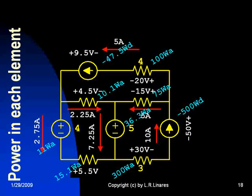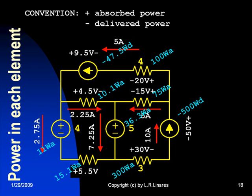So you see, there are two sources delivering power. The one on the top, 47.5, and the one on the right, 500 watts delivered power. So if you add together the delivered power, which is 547.5 watts, and you add together all the absorbed power by all the other elements, guess what? They are the same. It makes sense. Yeah, it's the principle of conservation of energy in a closed system. And that is what the circuit is supposed to be, a closed system.